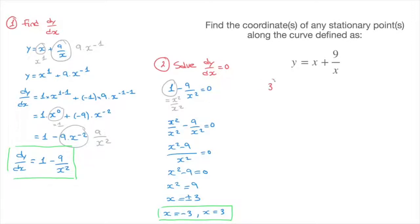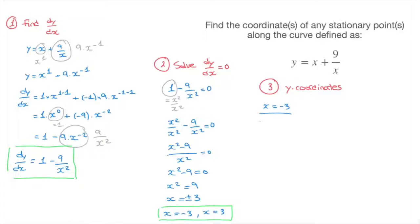We move on to the third and final step, where we calculate the y coordinates of the stationary points. We found two different x coordinates, so there are two stationary points. Starting with x equals negative 3: we go back to the original function y equals x plus 9 over x and replace every x with negative 3. That gives y equals negative 3 plus 9 over negative 3, which is negative 3 plus negative 3, equals negative 6. So the first stationary point has y coordinate negative 6.